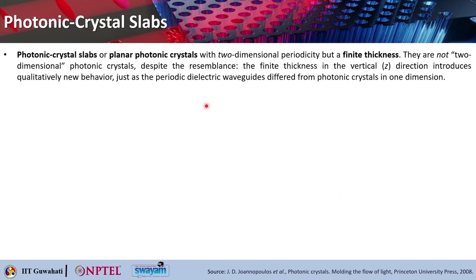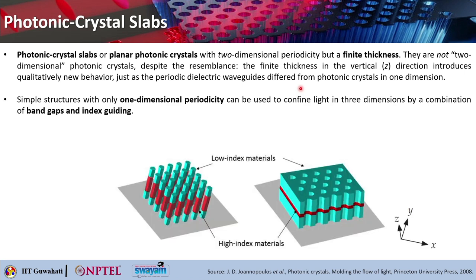What are Photonic Crystal Slabs? Photonic Crystal Slabs are planar Photonic Crystals with two-dimensional periodicity, but there is a difference — they have finite thickness. So they are not typically two-dimensional Photonic Crystals despite the resemblance. The finite thickness in the vertical or Z direction introduces qualitatively new behavior, just as periodic dielectric waveguides differ from Photonic Crystals in one dimension. Whether it is one-dimensional or two-dimensional periodicity, you require a new concept to confine light in three dimensions.